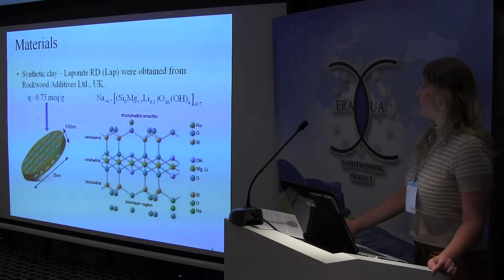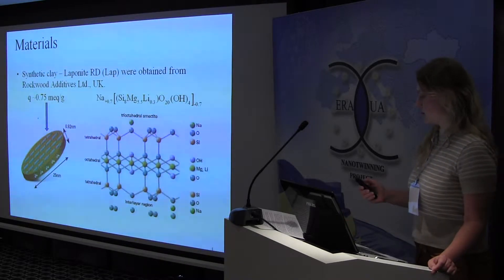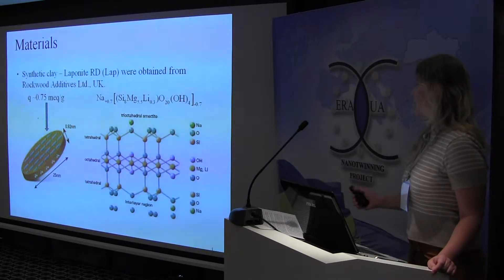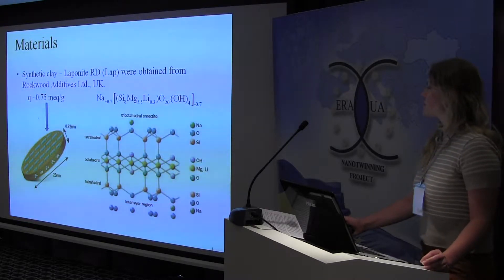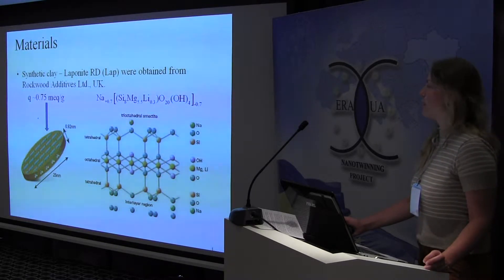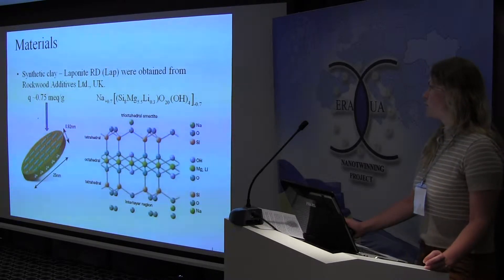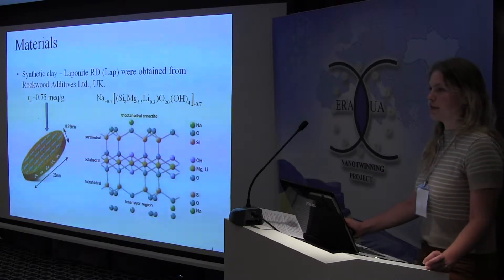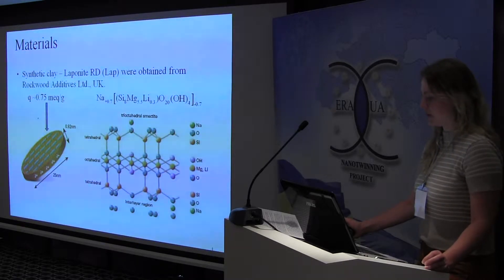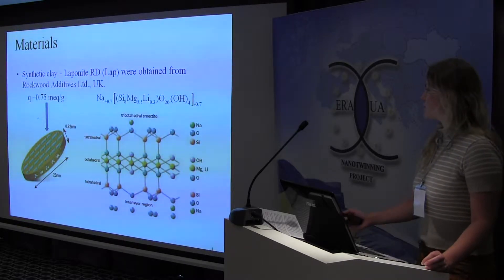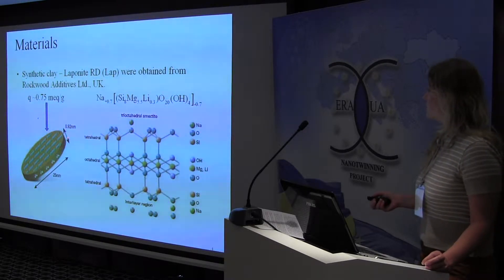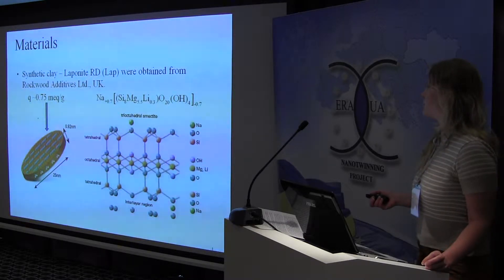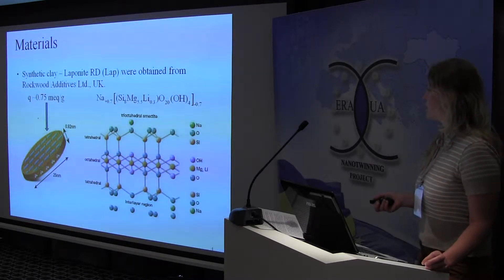Laponite is a synthetic clay with the shown chemical structure. According to the literature, the specific surface area determined by adsorption of methylene blue was 370 square meters per gram for laponite. Laponite is composed of disc-like sheets with thickness about 1 nanometer and average diameter 25–30 nanometers.